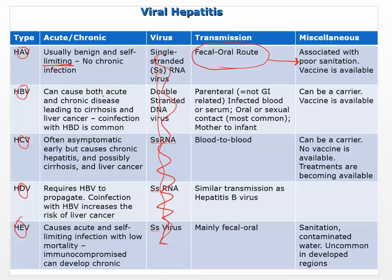Hepatitis B can cause both acute and chronic disease. It tends to become chronic when there's co-infection with hepatitis D. That's actually one of the ways hepatitis D was discovered — when looking at hepatitis B, a lot of times when it went to the chronic phase, hepatitis D was also present. Hepatitis B transmission is parenteral — meaning anything not related to GI, so blood, oral or sexual contact, and mother to infant. A vaccine is available and you can be a carrier.